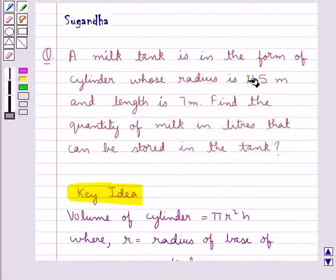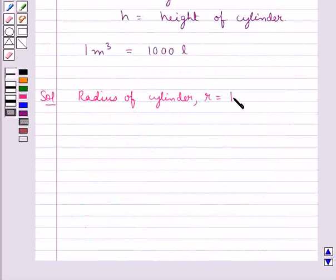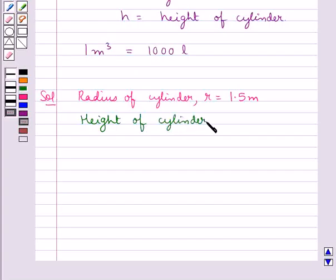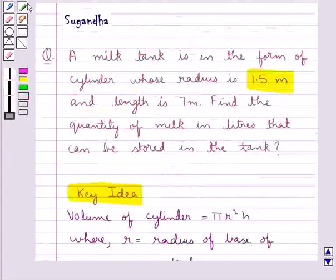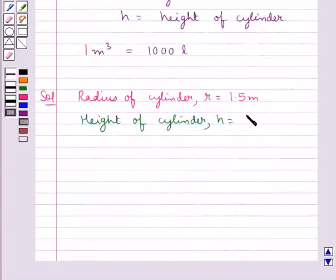Radius of cylinder r is given to be 1.5 meters. Height of cylinder h is given to be 7 meters.